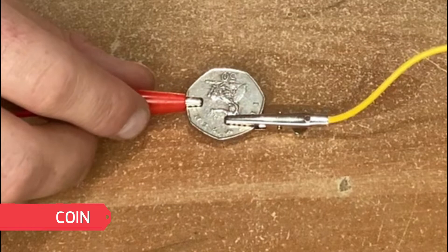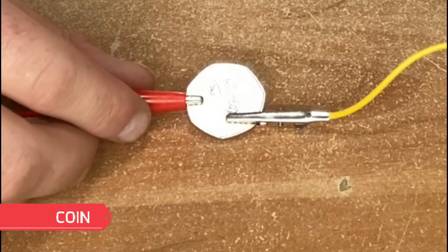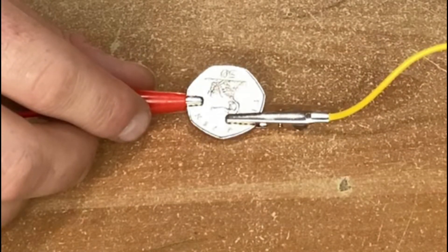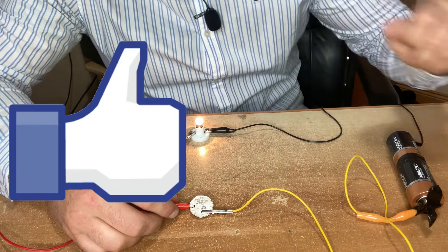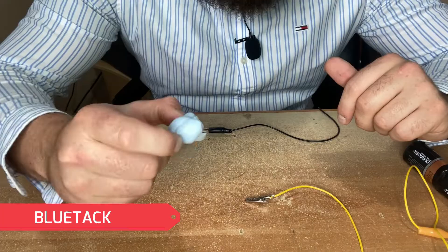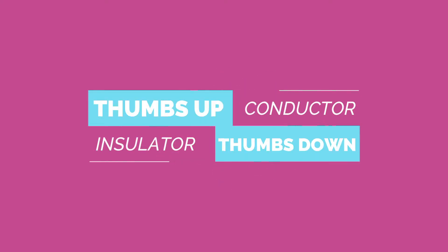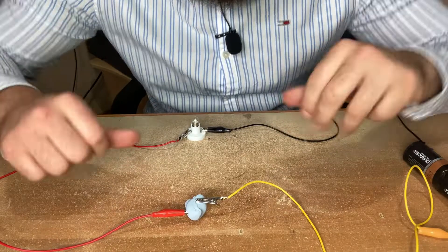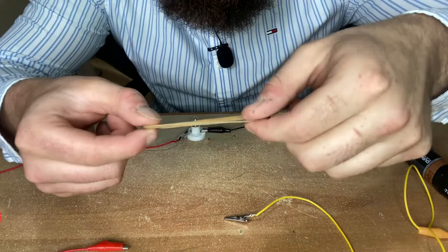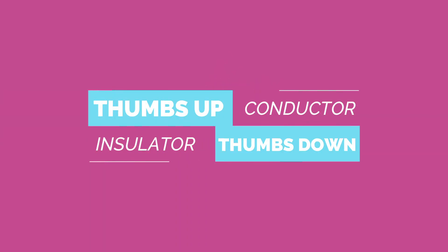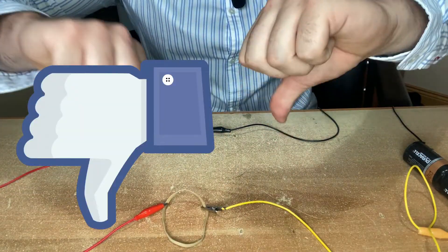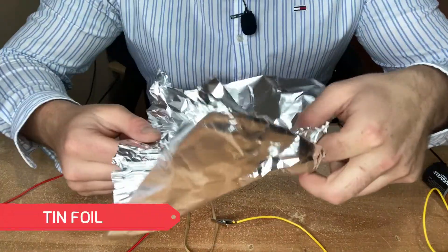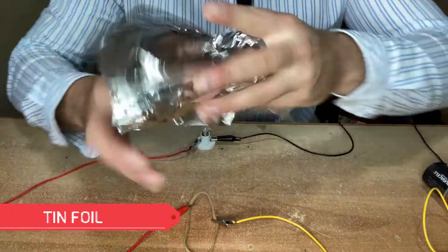Let's start off with an easy one. If you're paying attention earlier, you should already know if the coin is a conductor or insulator. And the light bulb's turned on, it's a conductor. Next up, we've got this ball of blu-tack. The light bulb's off, it's an insulator. Try this rubber band. Oh, the light bulb's off, it's an insulator. Next up, we got some tin foil. Whoa, the bulb's turned on, it's a conductor. Next up, we got this metal spoon. The light bulb's on, conductor.